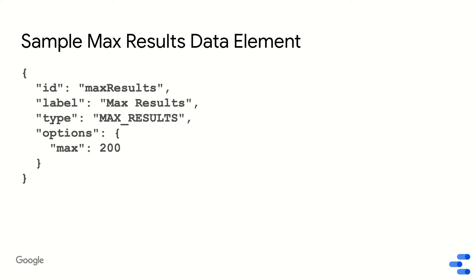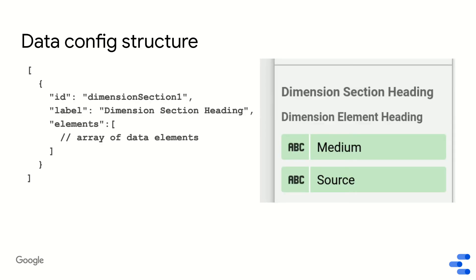How do these data elements fit together into the whole data part of your config? The data config structure consists of a list of data sections. Each data section has an ID, a label that is rendered in the property panel as a heading for a group of data elements, and then a list of data elements that belong to that section. A data config can have multiple data sections defined.